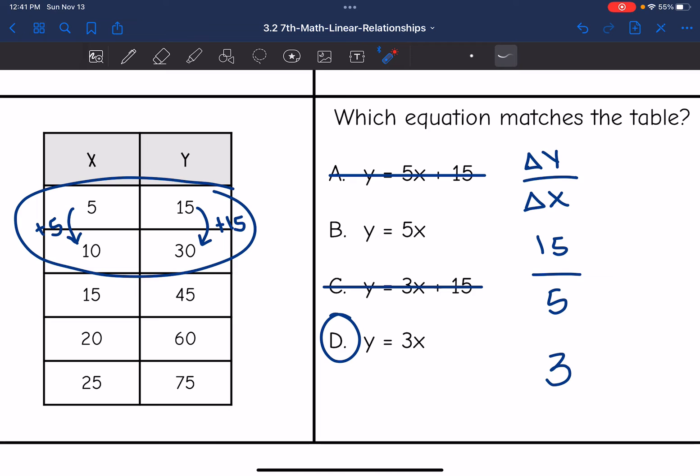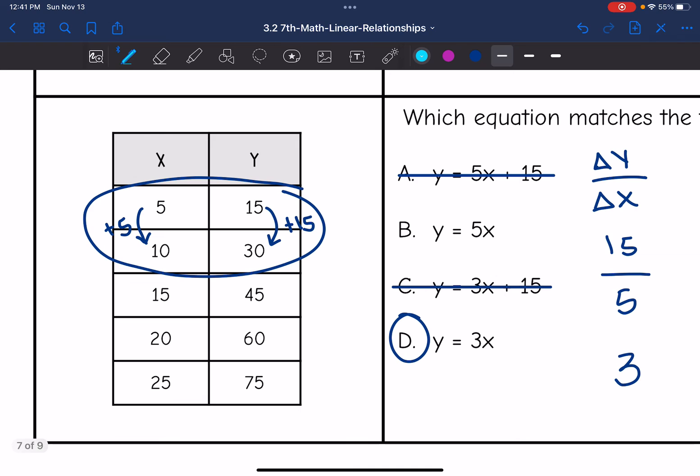And if it is proportional, that means this relationship is also going to be multiplicative. 5 times 3 is 15. 10 times 3 is 30. 15 times 3 is 45. 20 times 3 is 60. And 25 times 3 is 75. So yes, for a few reasons, we just proved that this is proportional. We don't have a y intercept or y intercept is zero. And we have that multiplicative relationship.